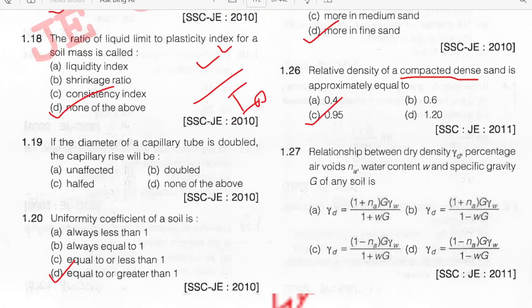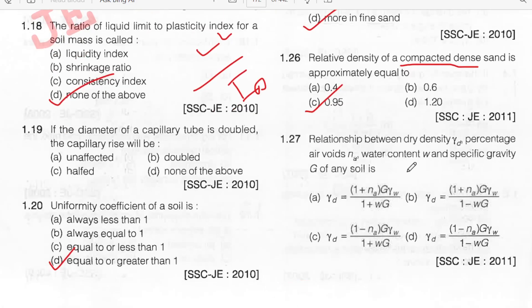The relationship between dry density γD, percentage air voids Na, water content W, and specific gravity G of any soil — the formula is: γD = (1 − Na) · G · γW / (1 + W·G). Option C.